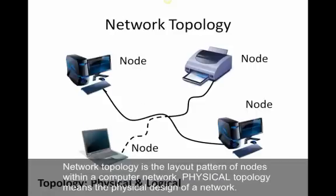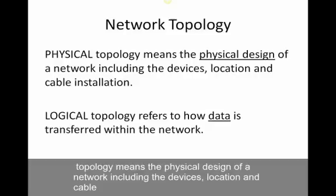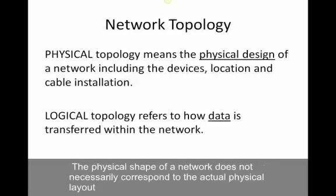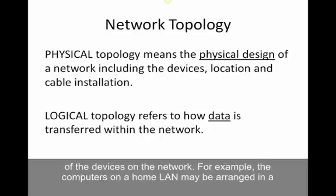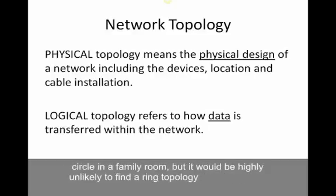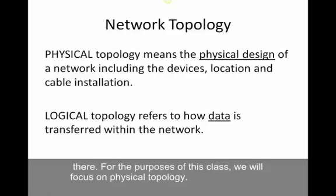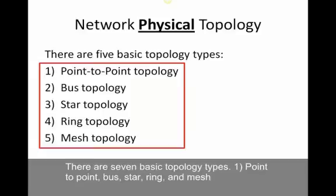Network topology is the layout pattern of nodes within a computer network. Physical topology means the physical design of a network, including the devices, location, and cable installation. Logical topology refers to how data is transferred within the network — to determine the type, you map the data flow between nodes. The physical shape of a network does not necessarily correspond to the actual physical layout of the devices. For this class, we're going to focus on physical topology and the five basic topology types.